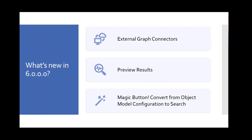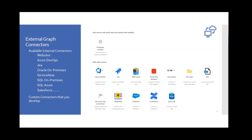Now let's get into the new features being released in version six. We have external Graph connectors, a preview results feature so you can see what results come back in advanced mode before hitting finish, and a magic button — which eagle-eyed viewers may have already spotted during configuration a moment ago.